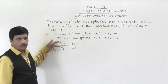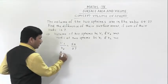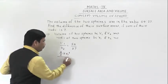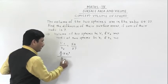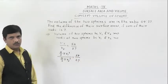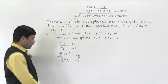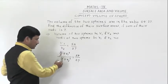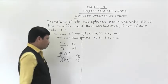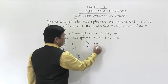We know that the volume of a sphere is equal to (4/3)πR³. So we write (4/3)πR1³ divided by (4/3)πR2³ equals 64 upon 27. The common factors 4/3 and π cancel, leaving R1³ upon R2³ is equal to 64 upon 27.